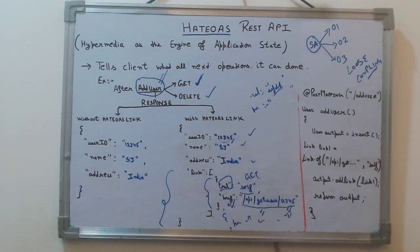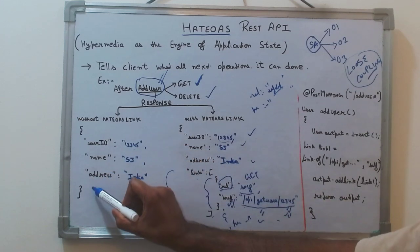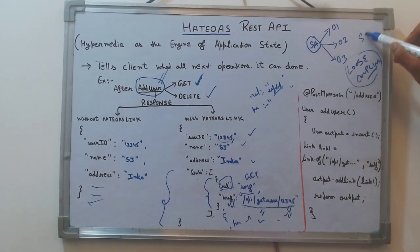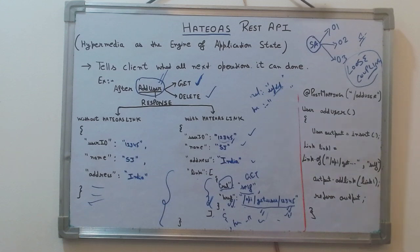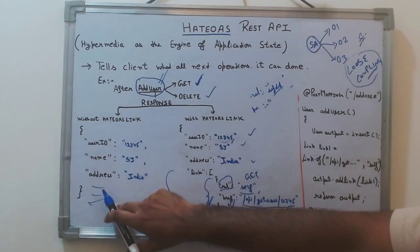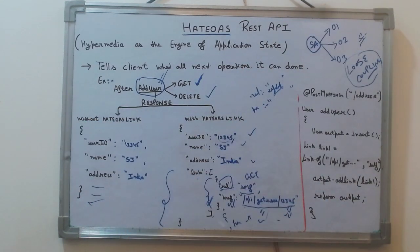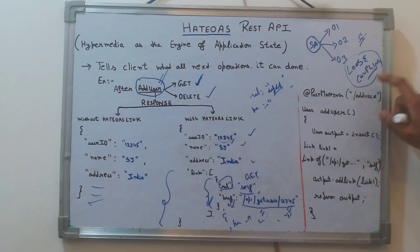The client does not have to have very tight coupling with our REST API. For example, based on the current state of the user — say the user's country — you need to perform a specific operation. That business logic can be removed from the client; the server can have all that business logic and just provide the link. The client directly invokes it without needing to know: if the country is this, or the state is unverified, call this API, otherwise that API.